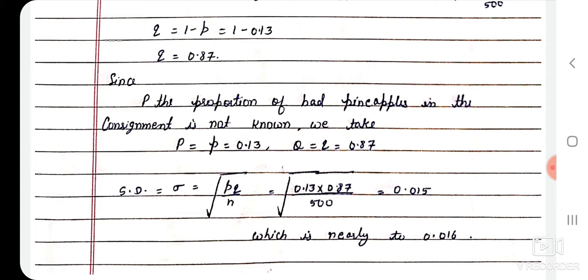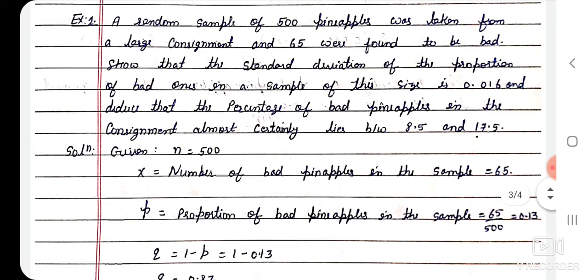Since P, the proportion of bad pineapples in the consignment, is not known, we use small p̂ as the estimate. So capital P is replaced by small p̂ and capital Q by small q̂. The standard deviation formula is root(PQ/n), but here using p̂ and q̂: sigma = root(pq/n). Calculating this gives the standard deviation of the proportion of bad pineapples in a sample of this size as 0.016.